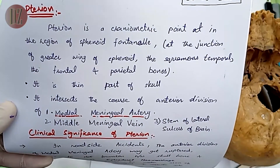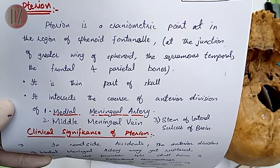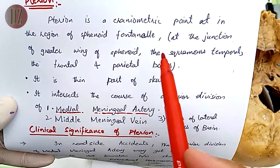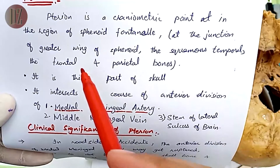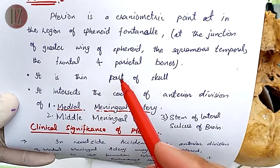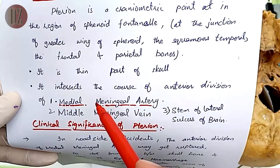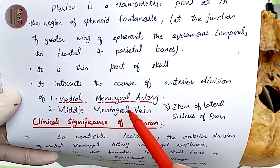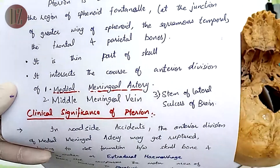Assalamu alaikum, bismillahirrahmanirrahim. In this video we are going to discuss an important clinical point of the skull — the pterion. Pterion is a craniometric point in the region of the sphenoid fontanelle, at the junction of the greater wing of sphenoid, the squamous temporal, the frontal, and the parietal bones. This is a thin part of the skull. It intersects the course of the anterior division of the middle meningeal artery, middle meningeal vein, and the stem of the lateral sulcus of the brain.